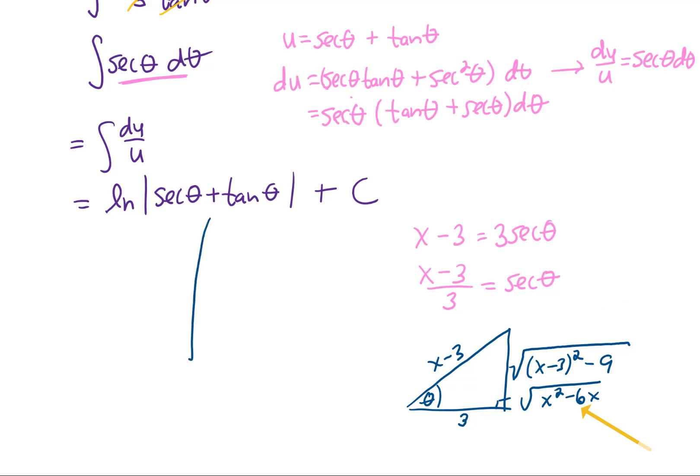So what we can do is rewrite our answer now. In this triangle, the secant of theta, well, I guess we already knew the secant of theta was x minus 3 over 3. But now we know that the tangent of theta, which is opposite over adjacent, is the square root of x squared minus 6x over 3. And I think that's a pretty good answer.